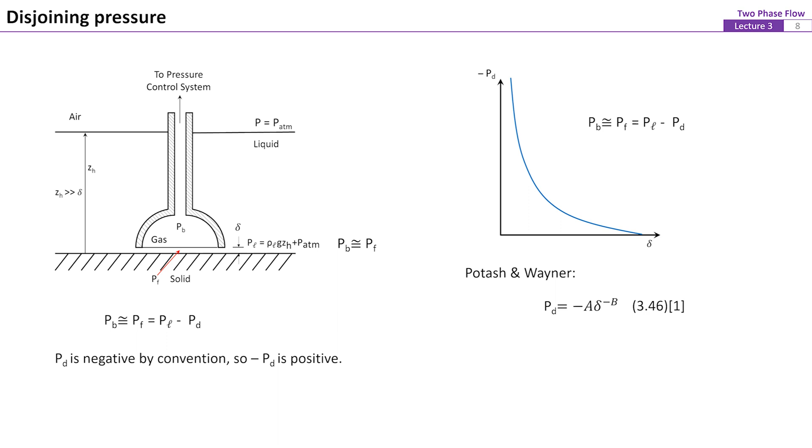In other words, for these circumstances, the pressure in the bubble and therefore the pressure in the thin film, Pf, is greater than the pressure of the ambient liquid, Pl.